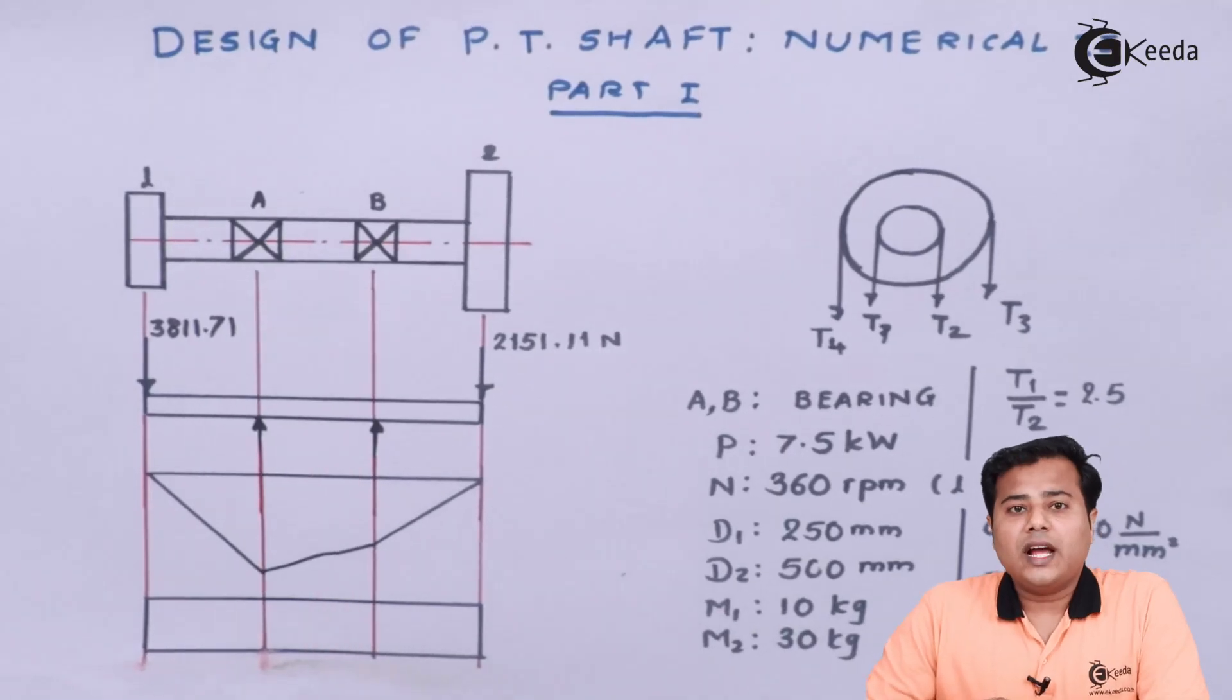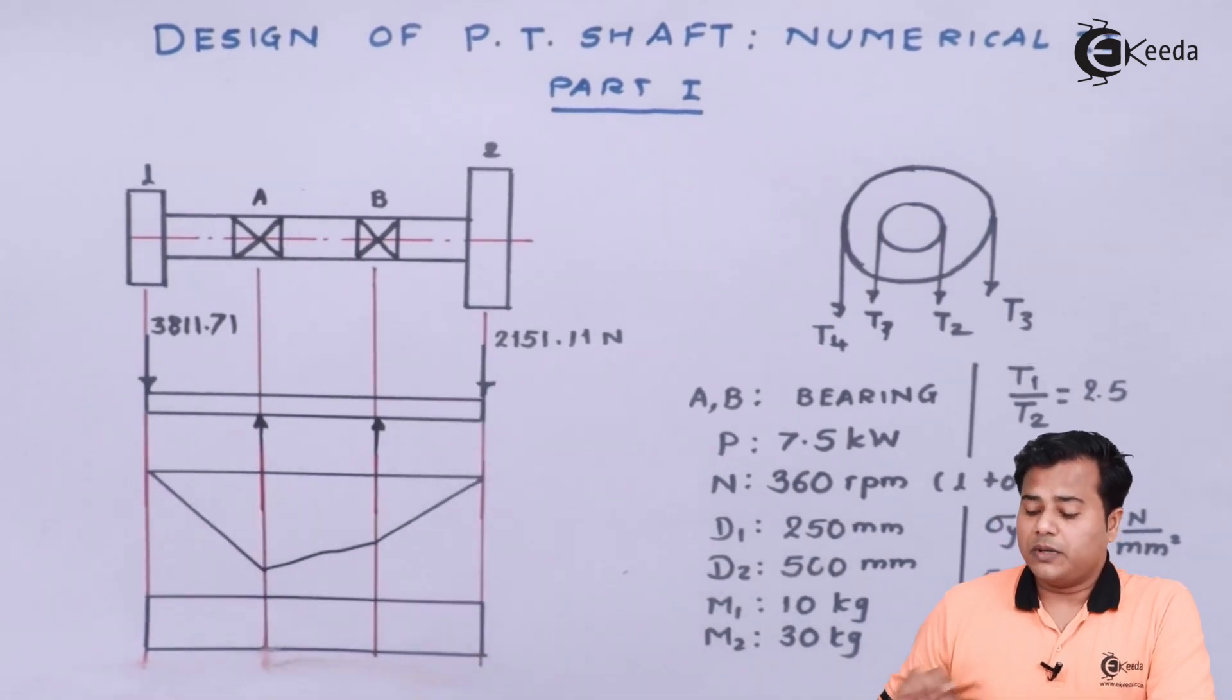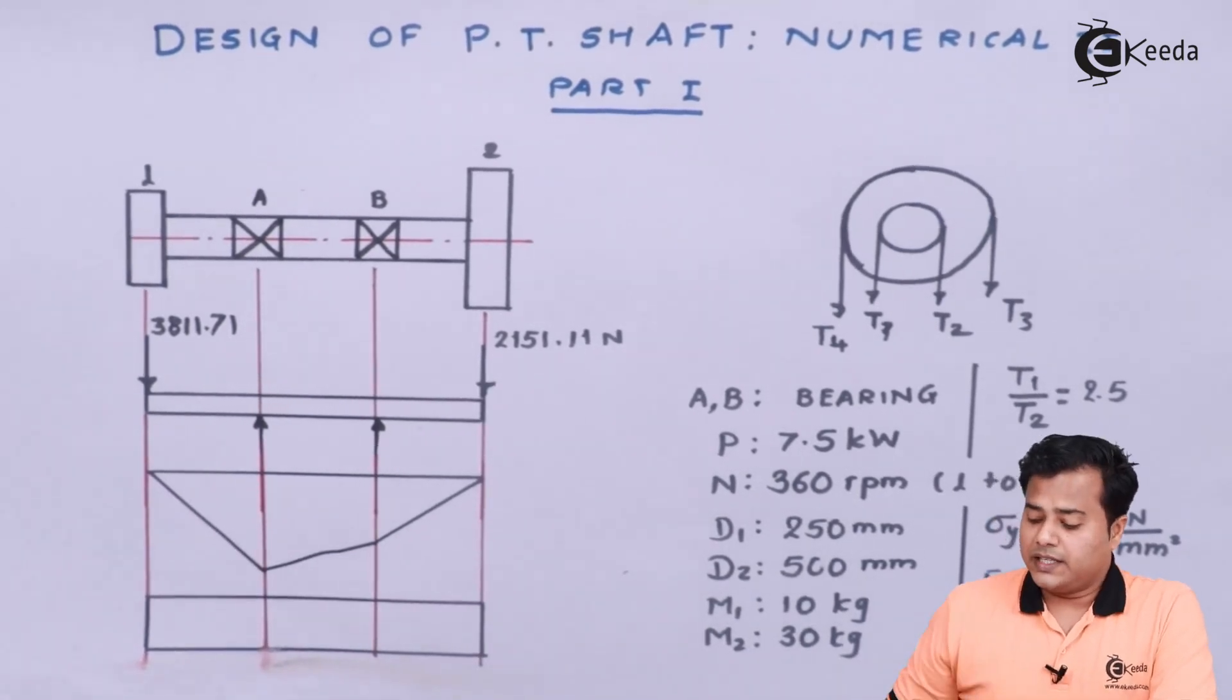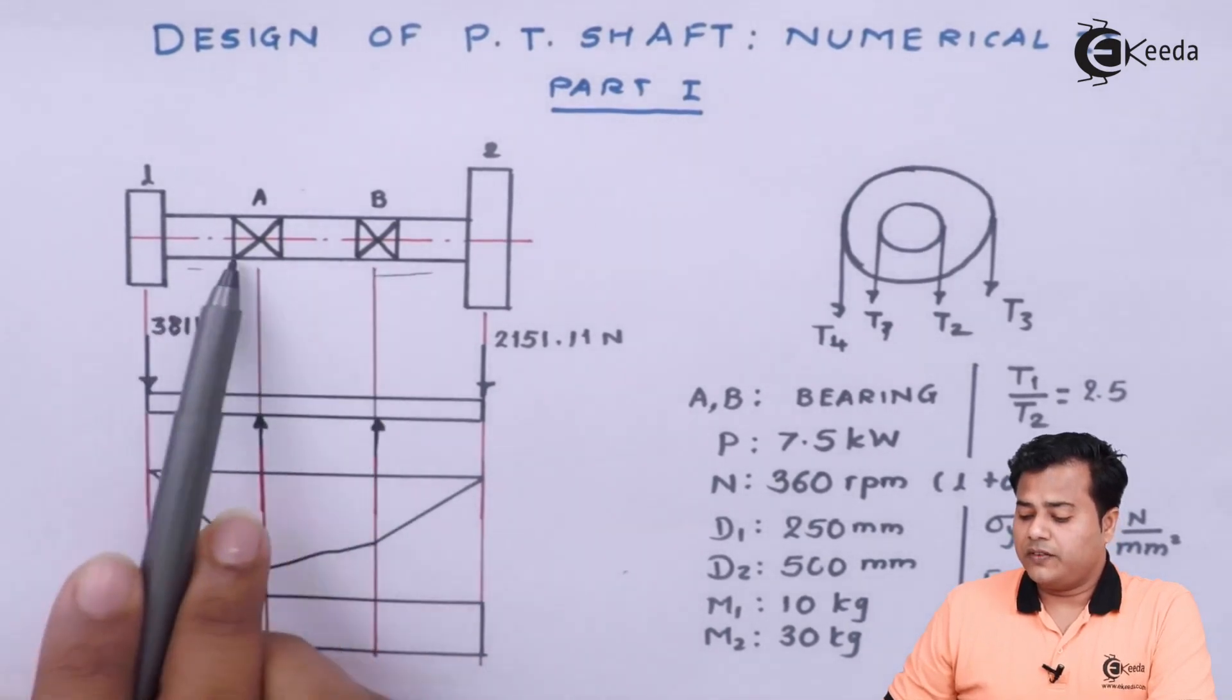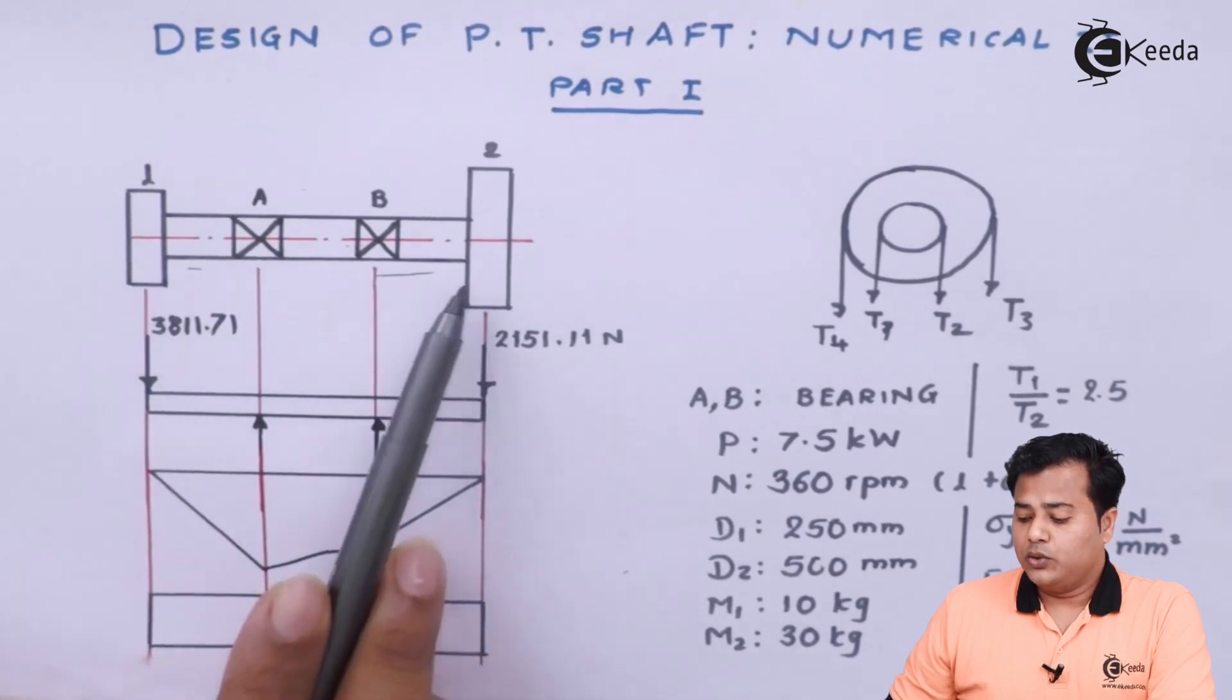So students as you can see on your screen there is a problem statement given. And that says we need to design a power transmission shaft. In this case this particular thing is the shaft which has been associated with 2 bearings and there are 2 discs.